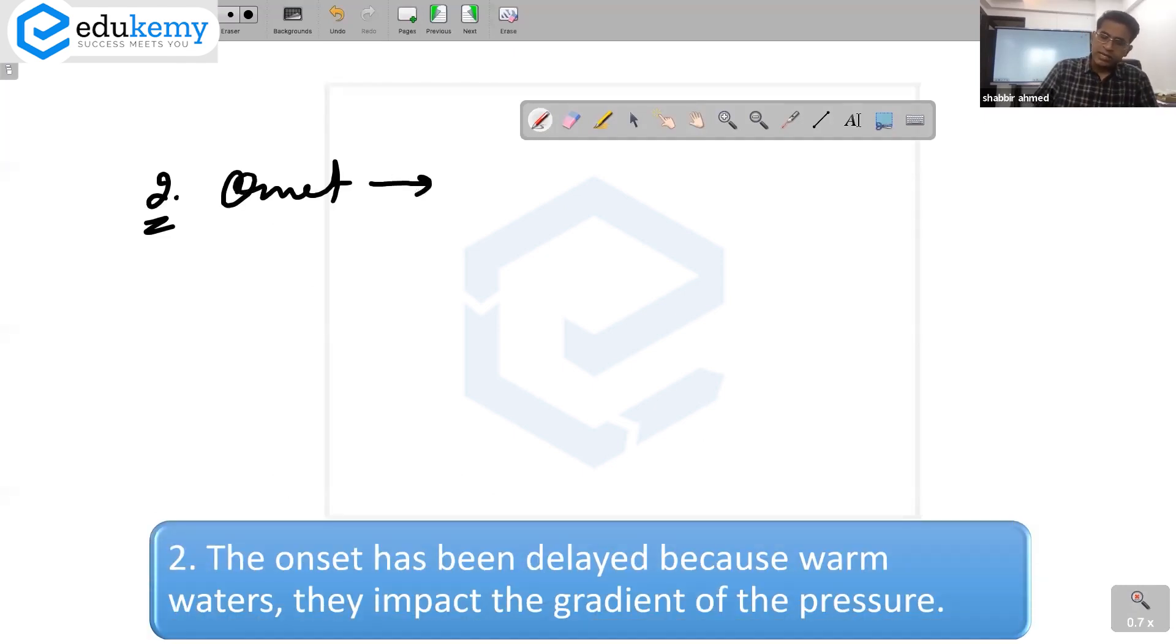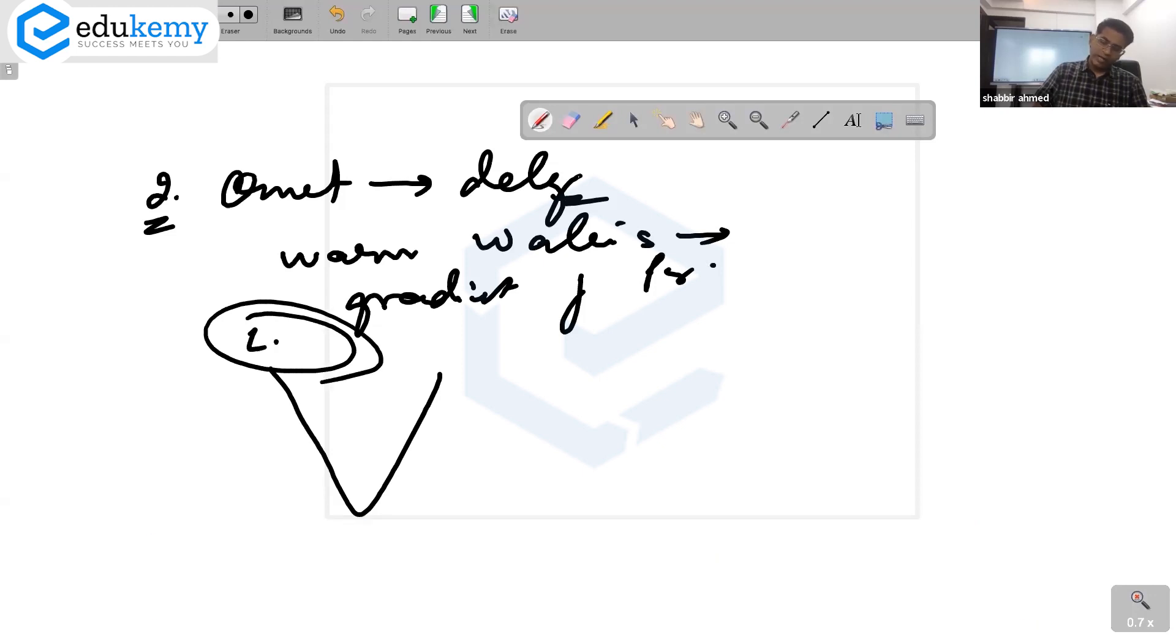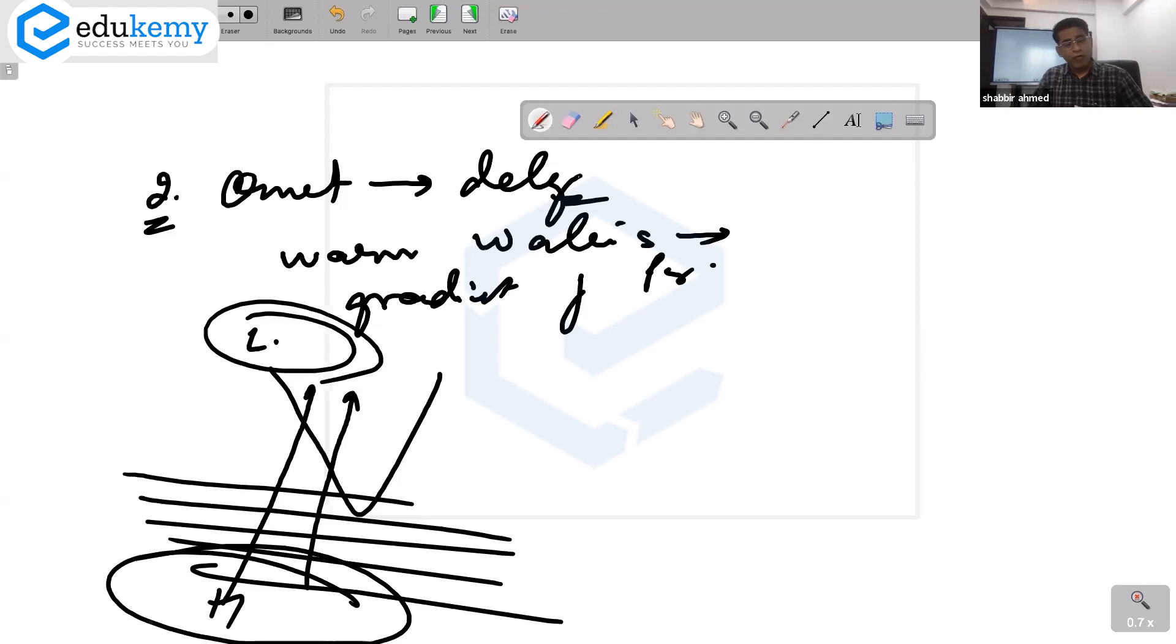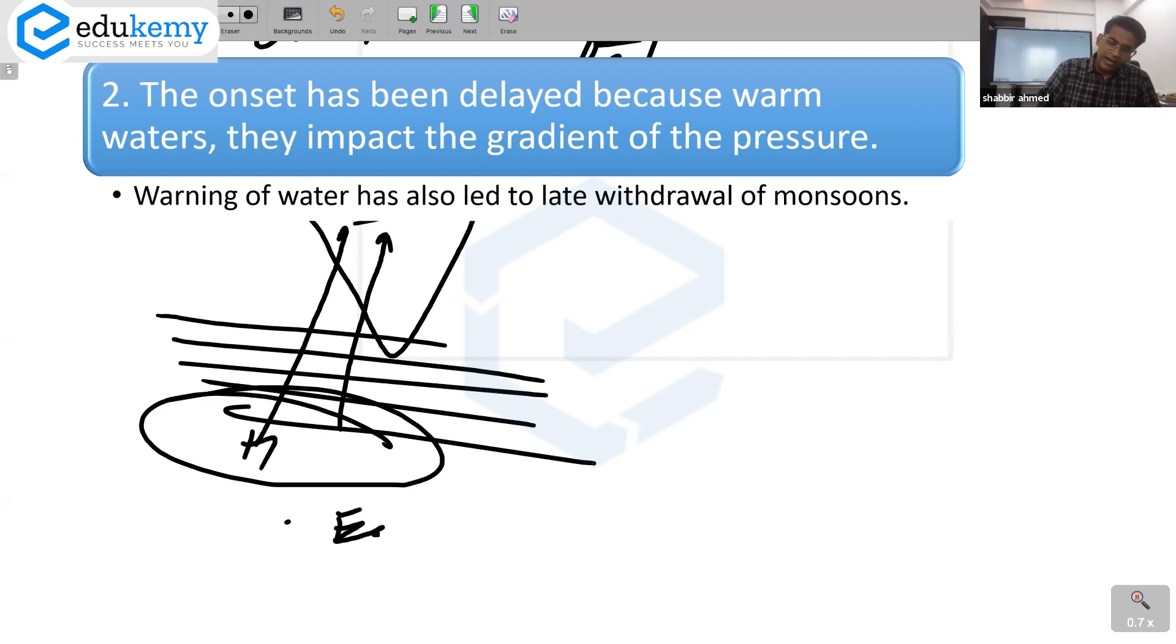Then you talk about the onset. The onset has been delayed because warm waters impact the gradient of the pressure. If this is India, I want this area to have low pressure, I want this area to have high pressure so that the winds can start moving in. But the waters are warmer. The waters will not allow for the winds to move toward the land as easy. So onset of monsoon has been delayed. Now monsoon onset can be as late as late June also. Almost one month delay. Systematically across last couple of years, onset has delayed. Why? The pressure gradient has been impacted.